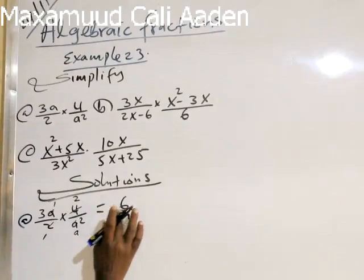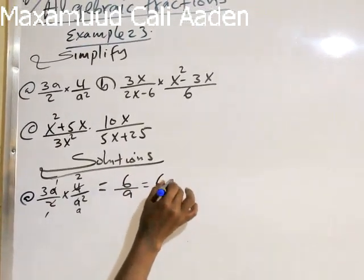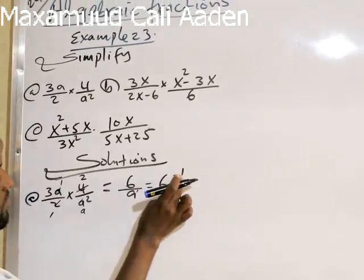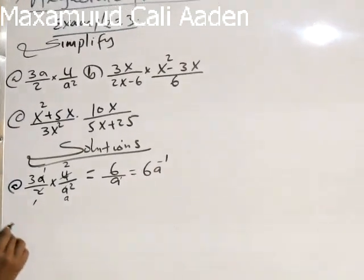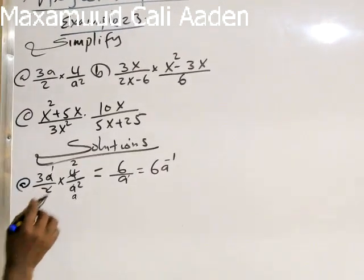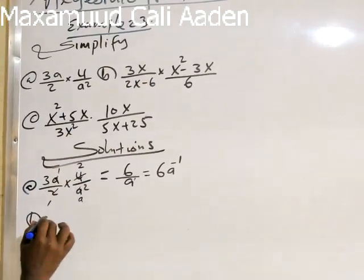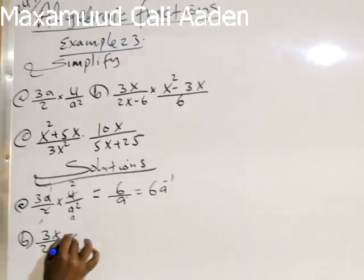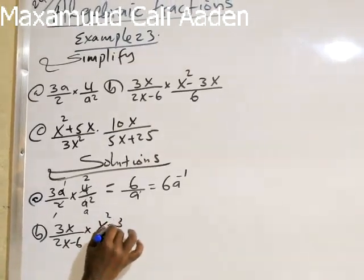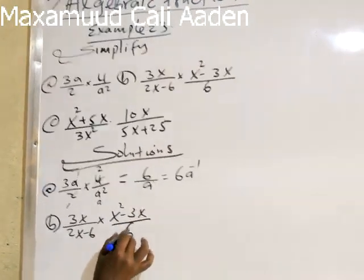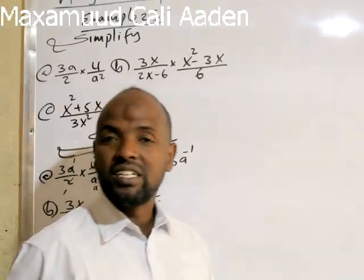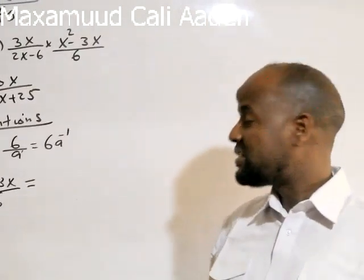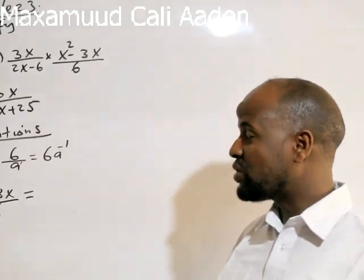Six divided by eight, and we will say 6A to the F to minus 1 and F to minus 1. So we will tell you that 3x divided by 2x minus 6. We will multiply that by x squared minus 3x, and we will tell you that this is the correct approach.